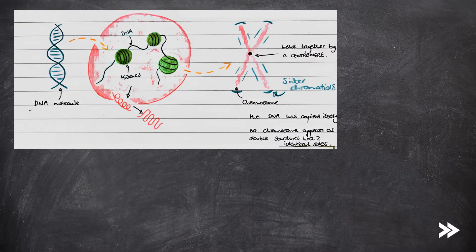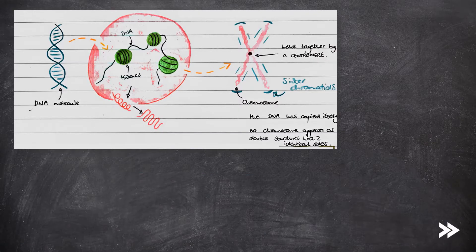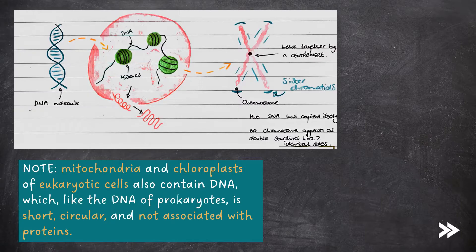Let's have a look at the DNA in the nuclei of eukaryotic cells. The DNA double helix is wound around histones to take up as little space as possible so that it can fit in the nucleus. Histones also support the DNA, and together the DNA and histones are coiled up very tightly to form a chromosome. Note that the mitochondria and chloroplasts of eukaryotic cells also contain DNA, which, like the DNA of prokaryotes, is short, circular, and not associated with proteins.